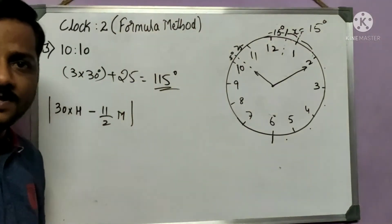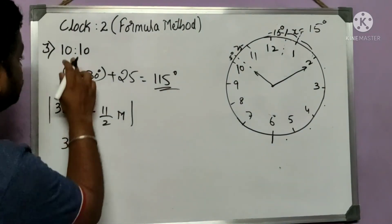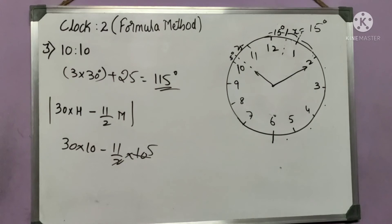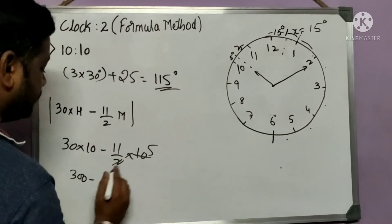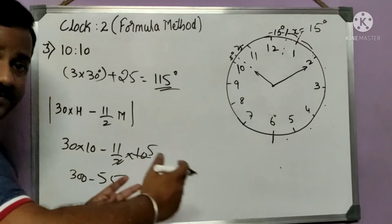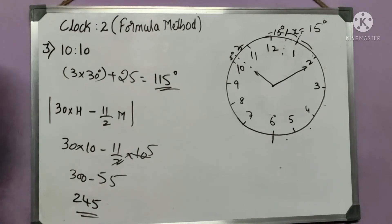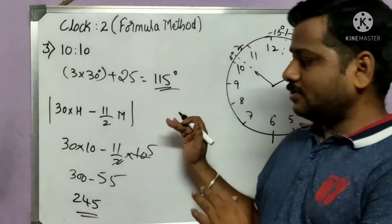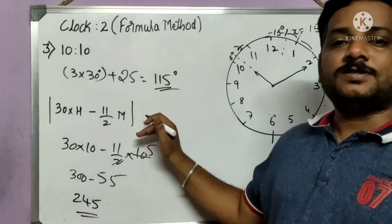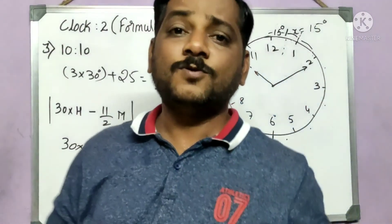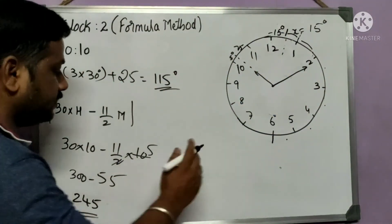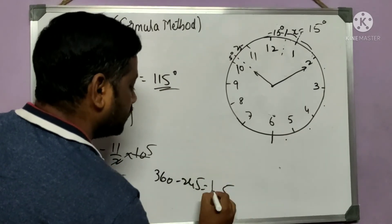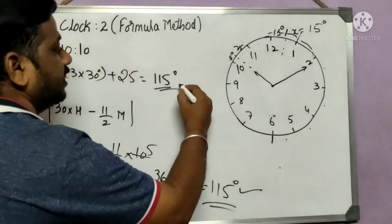Applying the formula: 30 × 10 − (11/2) × 10 = 300 − 55 = 245 degrees. Since 245 is greater than 180, apply: 360 − 245 = 115 degrees, which matches the traditional method. So whenever the formula gives more than 180, subtract from 360 to get the actual angle.